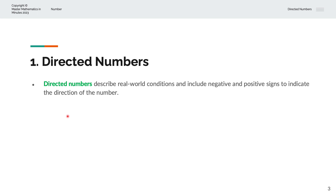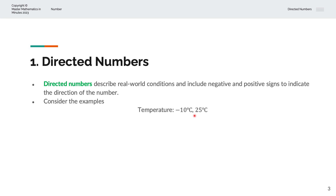Let's take a look at a couple of examples. We have temperature: minus 10 degrees Celsius and 25 degrees Celsius. Minus 10 indicates that it is 10 degrees below zero, and positive 25 is where it is 25 degrees above zero.